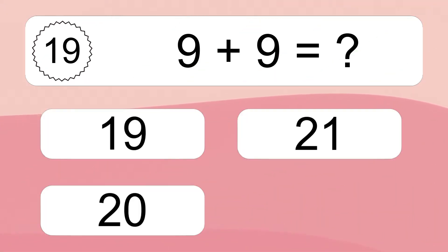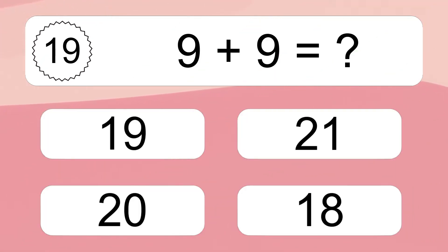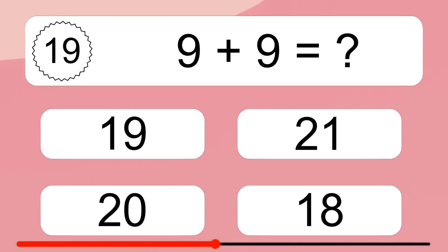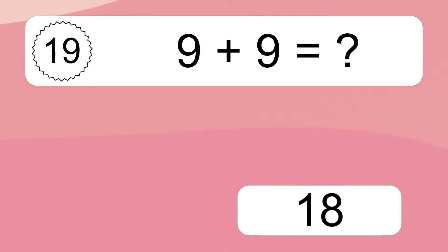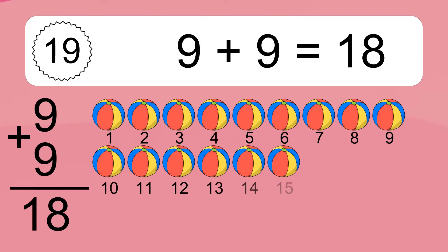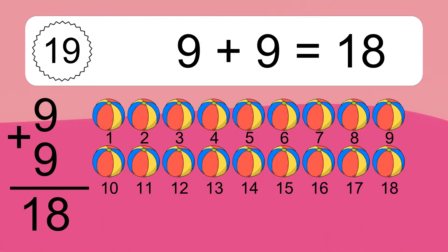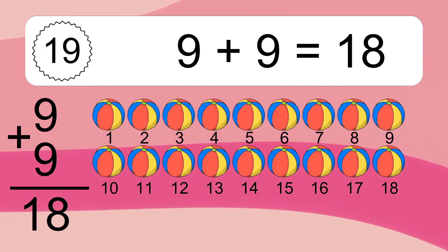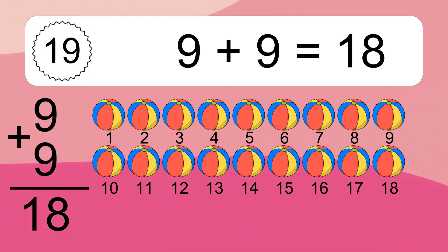9 plus 9 equals what? 9 plus 9 equals 18. Let's count it: 1, 2, 3, 4, 5, 6, 7, 8, 9, 10, 11, 12, 13, 14, 15, 16, 17, 18.